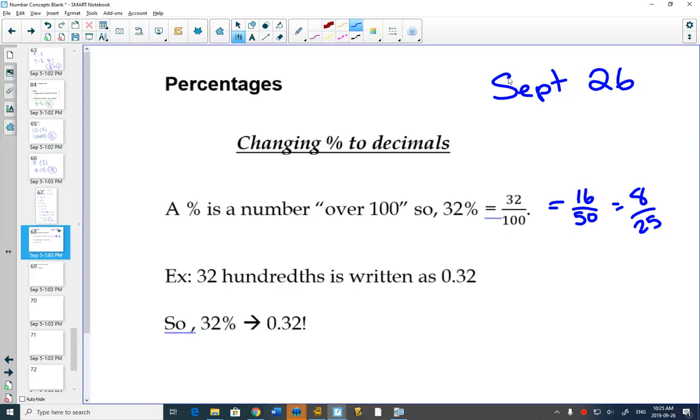And since a percentage is over 100, so if 32% is 32 out of 100, you can always write a percentage as a decimal. 32% is 0.32.